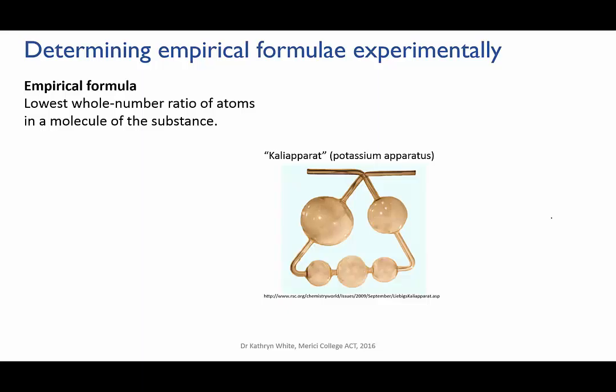One of the methods early chemists used to analyse unknown substances was developed by Justus von Liebig in 1831, specifically for carbon-based compounds. A sample would be thoroughly burnt in the presence of oxygen.